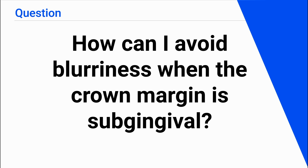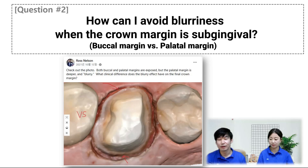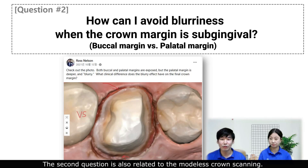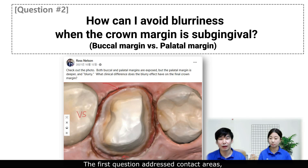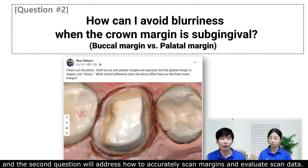How can I avoid blurriness when the crown margin is subgingival? The second question is also related to model-less crown scanning. The first question addresses contact areas, and the second question will address how to actually scan margins and develop scanned data.